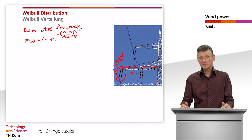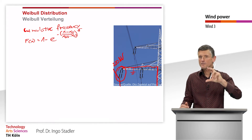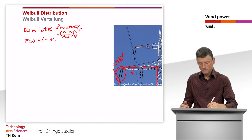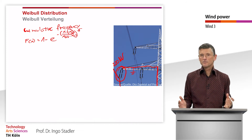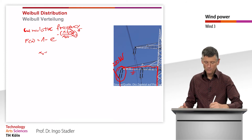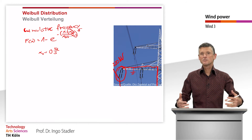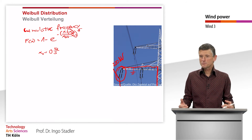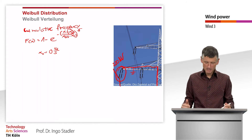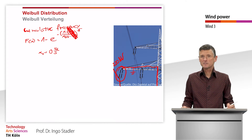All measurements have in common that up to a certain voltage we never have a breakthrough — that is the so-called x₀. When we go back to wind, we can say that x₀ for wind is always zero meters per second, because even at the best wind sites in the world, sometimes we have a calm and the wind speed is zero. So for wind power we can forget about x₀.